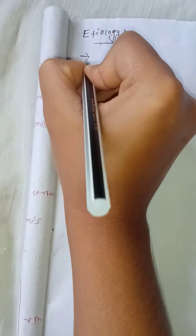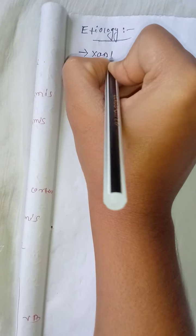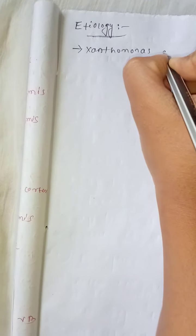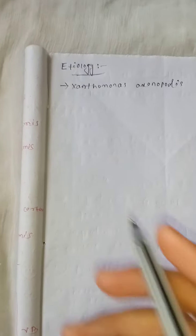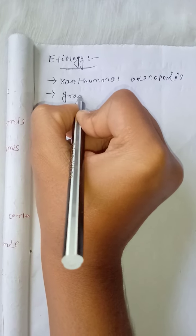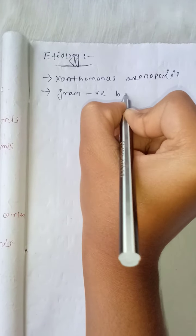The most causal bacteria is Xanthomonas axonopodis. Xanthomonas axonopodis is the bacteria which causes citrus cancer. The most common bacteria is gram-negative bacteria, which is what produces citrus cancer.